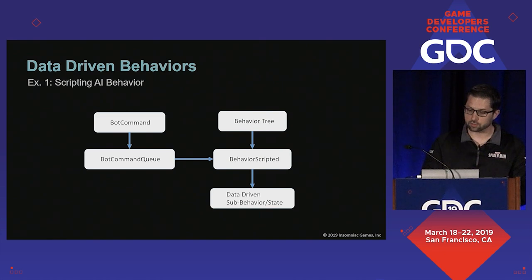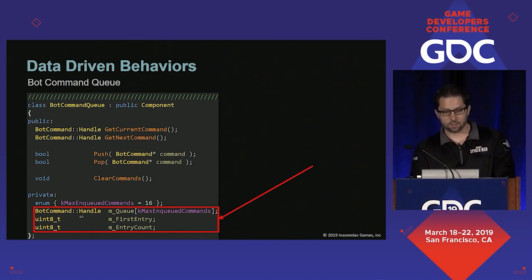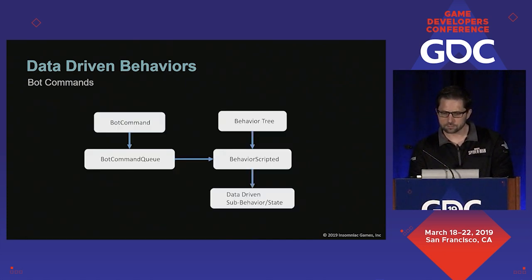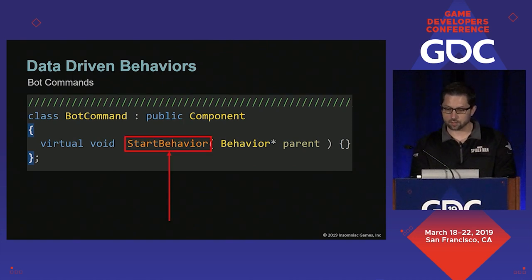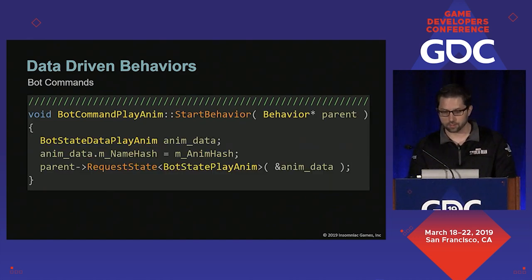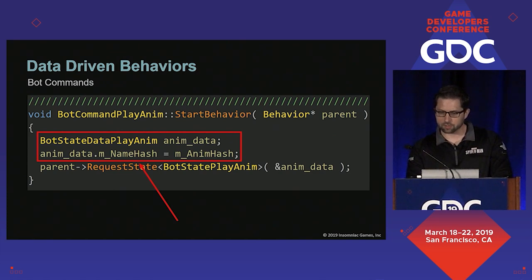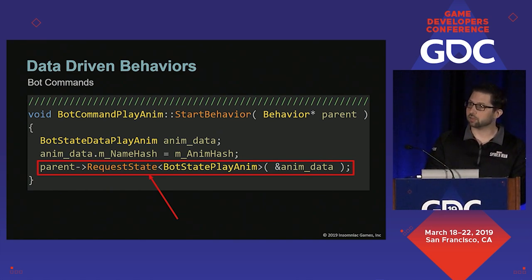Let's take a look at the individual components starting with our command queue. All it really does is provide storage for designer commands that a bot is going to execute and a simple interface for accessing them. The basic command itself is really just an interface. An actual command will use this method to start whatever behavior or state it needs to and attach it to the provided parent behavior. Here's an implementation of that method in a play anim command — it sets up some data for a play anim state and then requests that state to be added to the provided behavior. All bot commands follow this format — they're created by script and added to the bot command queue.